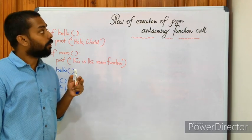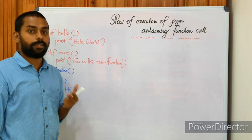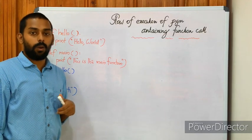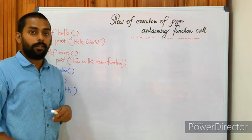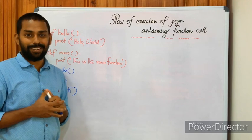This is how the flow of execution works in a program containing function calls. Execution begins at the first statement, one statement is executed at a time from start to end. When a function call is encountered the order changes — control passes to the function definition and returns only after execution completes. That is all for this session. Thank you for watching, have a nice day.